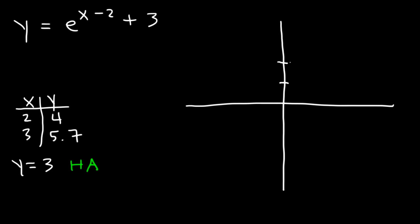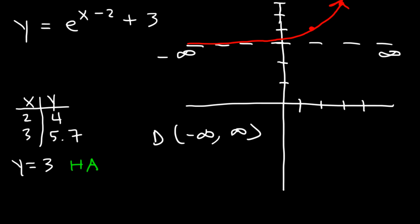So let's start with the horizontal asymptote at 3. When x is 2, y is equal to 4. When x is 3, y is going to be about 5.7, so very close to 6. The graph is going to start from the asymptote and it's going to follow the two points. So the domain is all real numbers, from negative infinity to infinity. The range is based on the y values. The lowest y value is 3, the highest is infinity. So the range is from 3 to infinity.